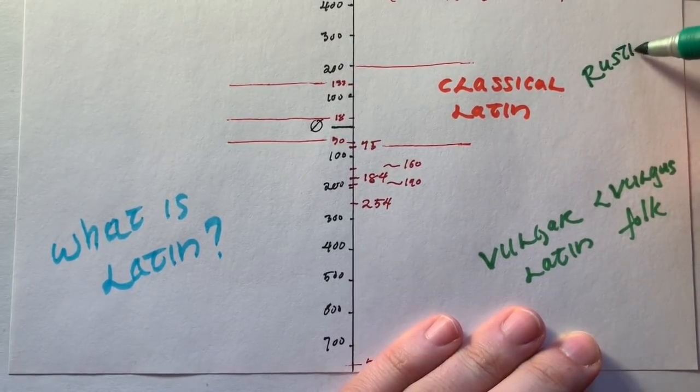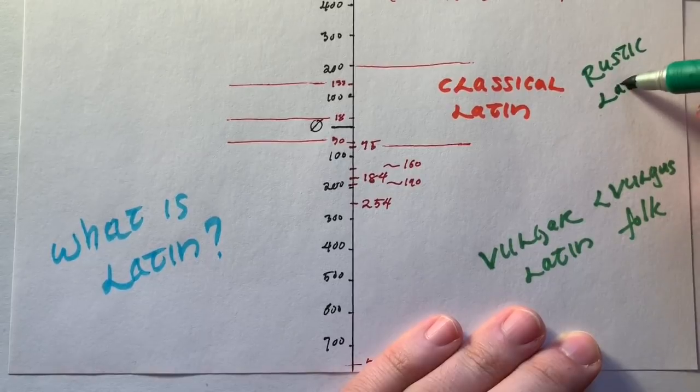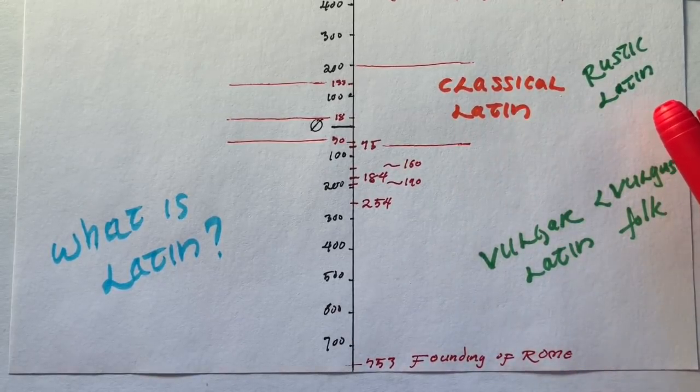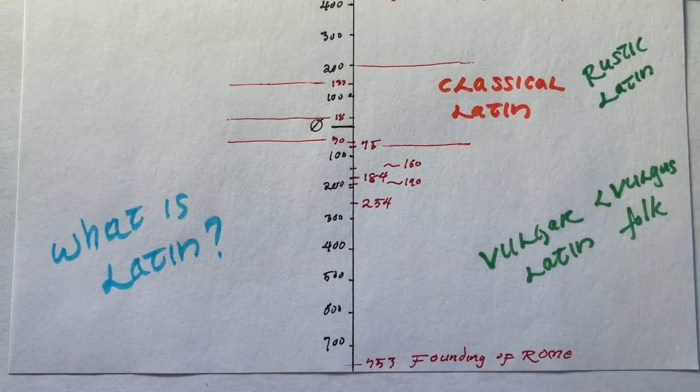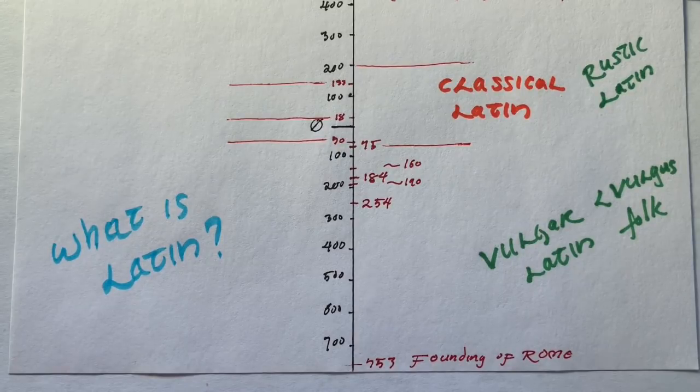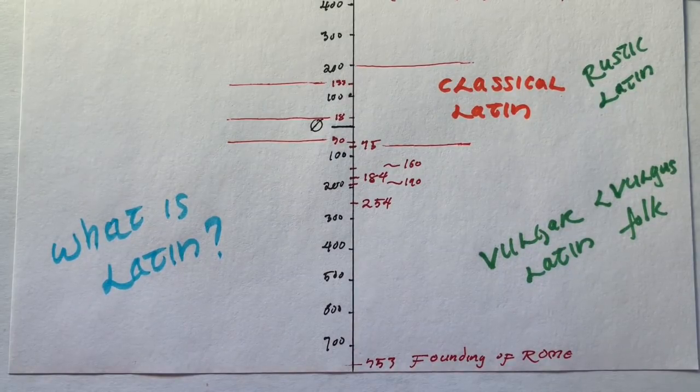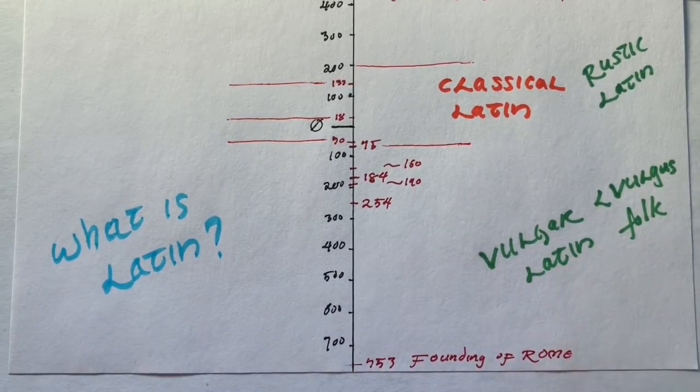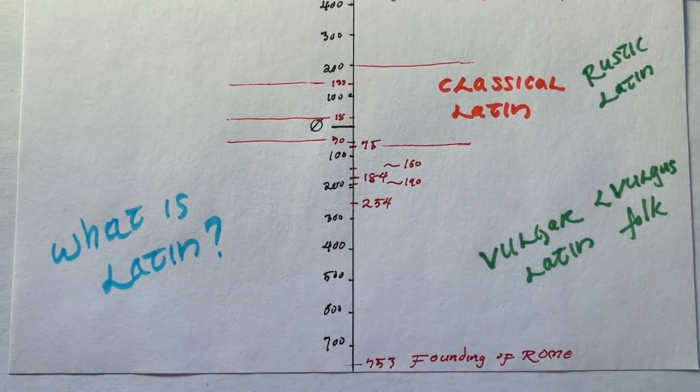That stands in contrast with various forms of more rustic Latin, which I'll also write over here. Rustic Latin could happen at any period. Rustic Latin could be that form, or it could be anything of the vulgar Latin, the people's Latin, the non-educated variant throughout Italy and ultimately throughout the Roman Empire.